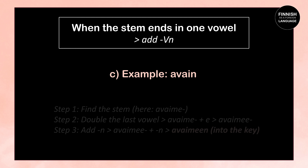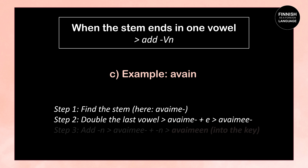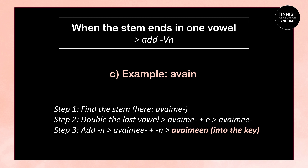Next example: avain, which means key. The stem is avaime. In the second step we double the last vowel: avaime + e = avaime. Then we add the letter N: avaime + N = avaimeen, which means to or into the key.